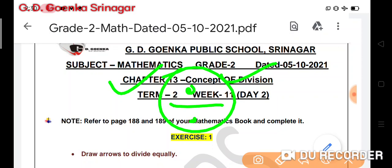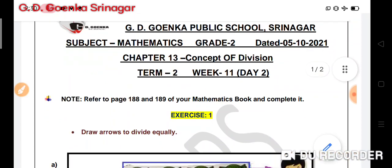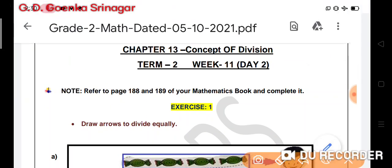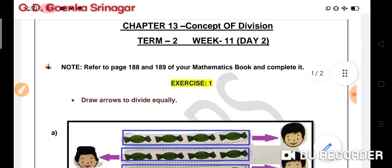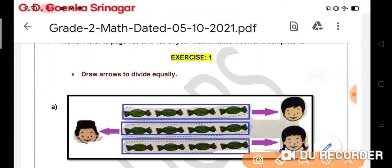Today we will be doing exercise 1. You will refer to your mathematics book on page numbers 188 and 189, and we shall complete this exercise in the book. In this question, we have to draw arrows to divide equally. Let us get started with the exercise.